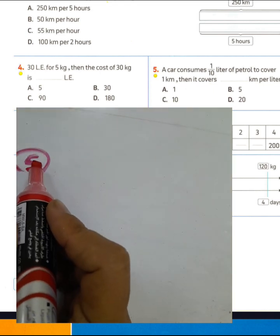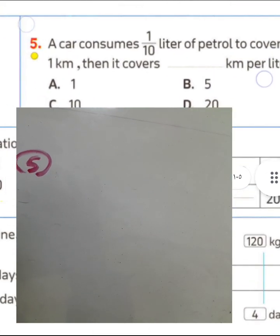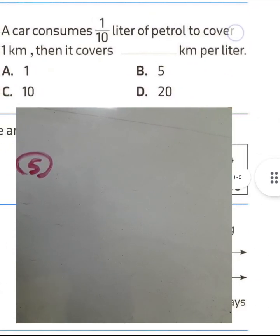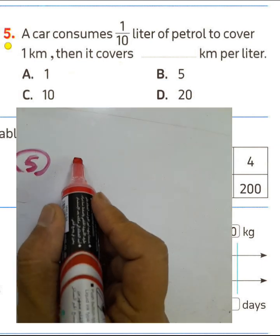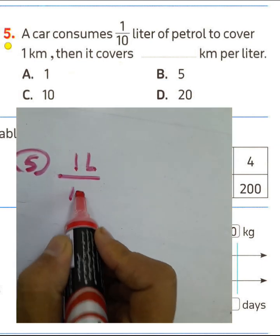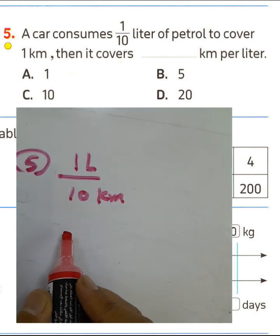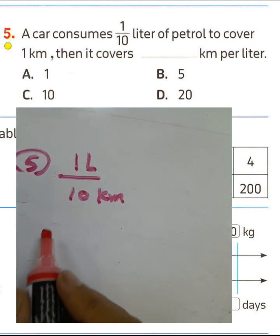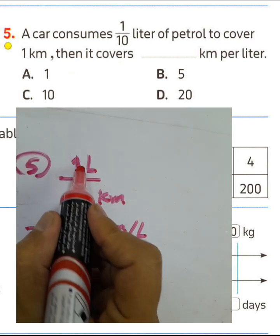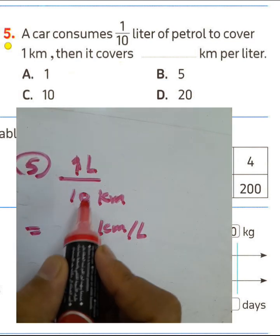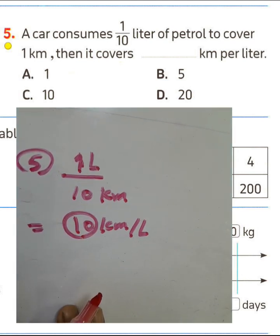Question 5: A car consumes 1/10 litre of petrol to cover 2 km. How many km does it cover per litre? We take the inverse: 1/10 litre per km becomes 10 km per 1 litre. So 10 divided by 1 equals 10. The result is 10 km per litre.